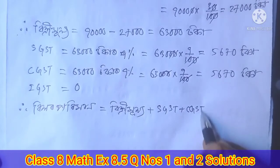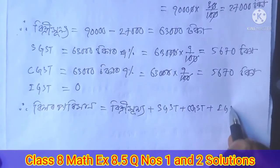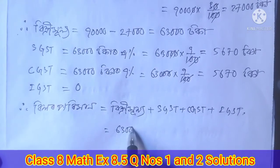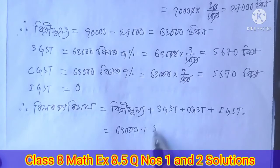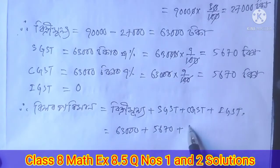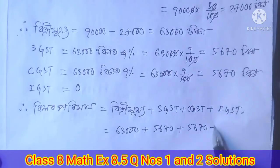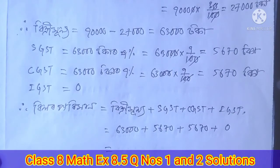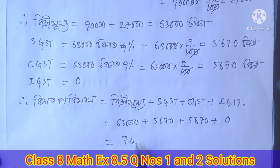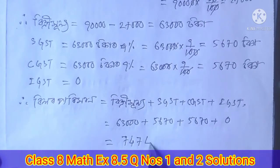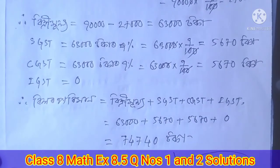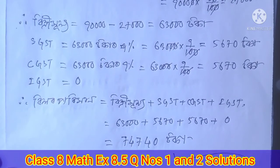The total bill is: 63,000 (base price) plus SGST 5,670 plus CGST 5,670, and IGST is 0. The total comes to 74,340. The whole bill amount is determined. I hope you enjoyed the video.